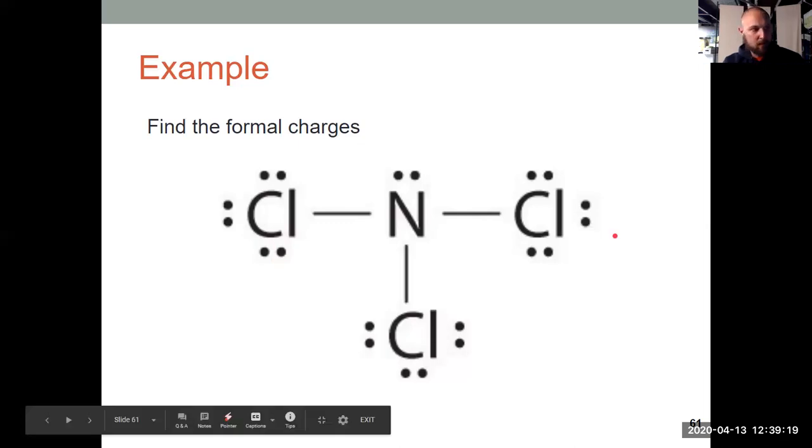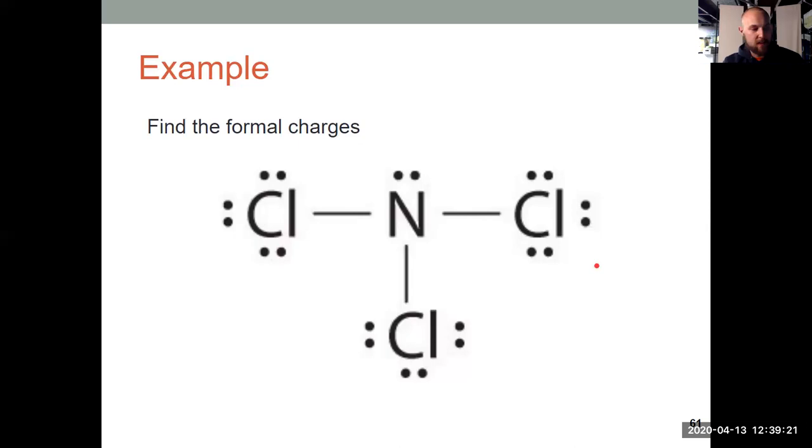So I know that those are happy. And you'll see that halogens like that. Anything in group 17 likes to have a single bond and three lone pairs.